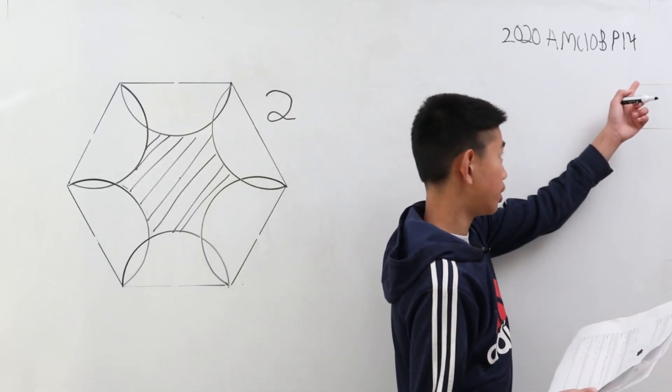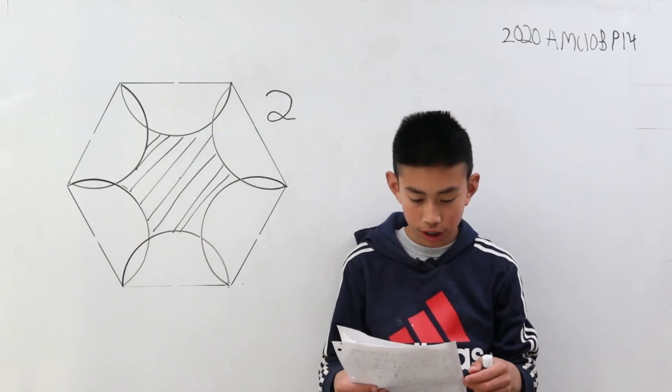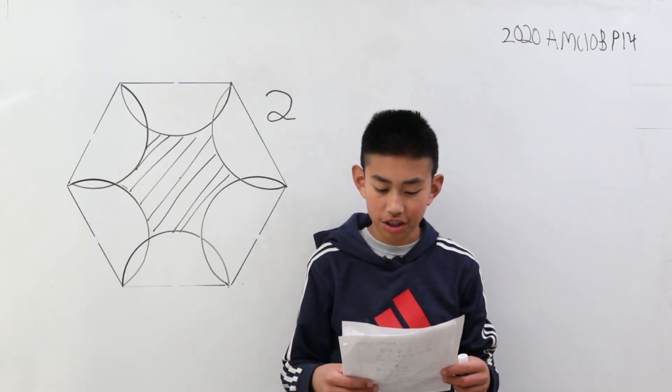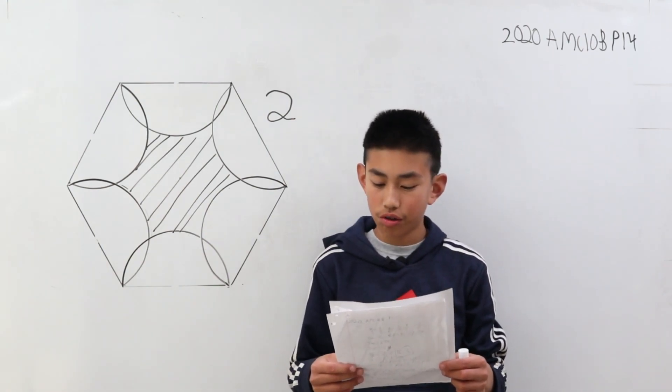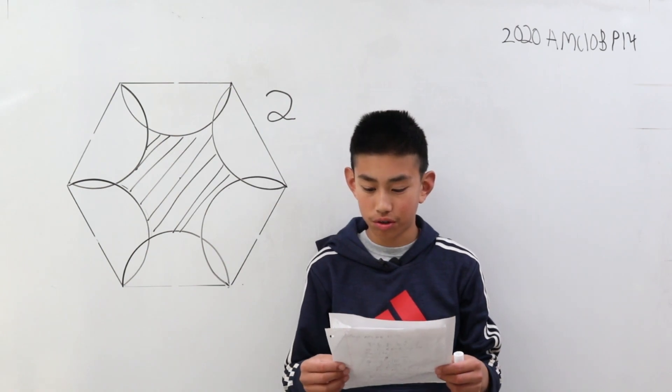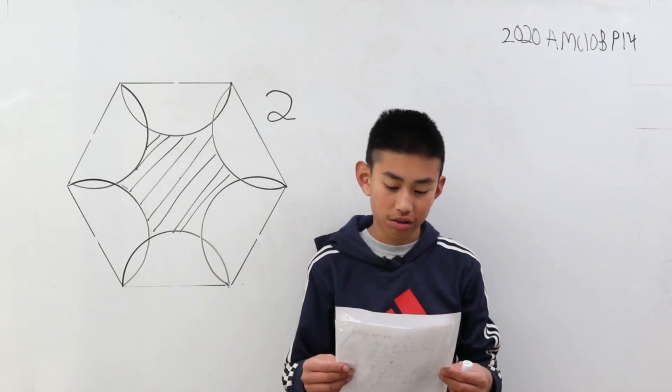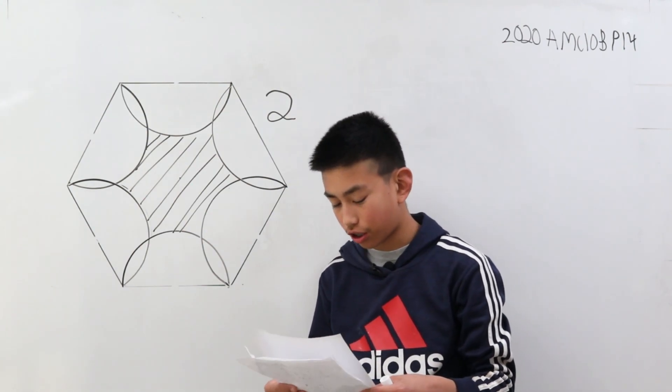We're solving problem 14 from the AMC-10B from 2020. As shown in the figure below, six semicircles lie in the interior of a regular hexagon with side length 2, so that the diameters of the semicircles coincide with the sides of the hexagon. What is the area of the shaded region inside the hexagon but outside all of the semicircles?